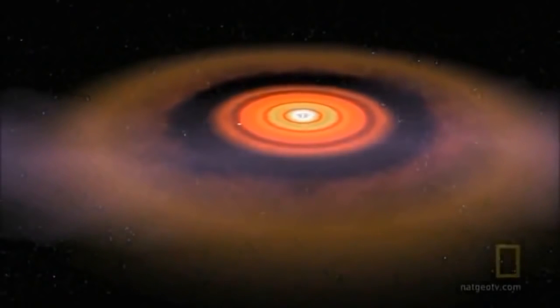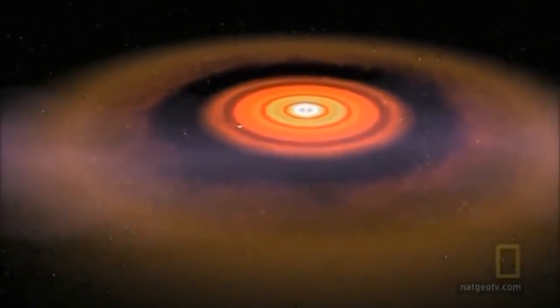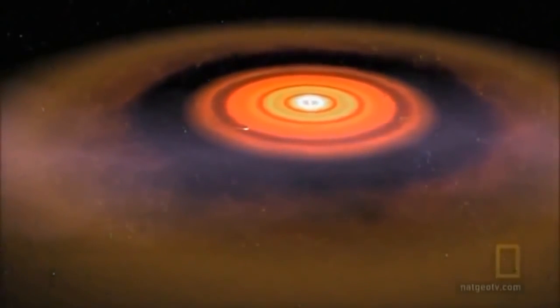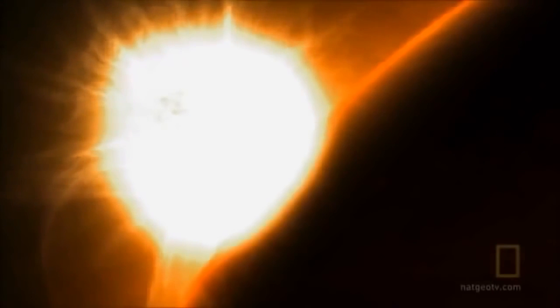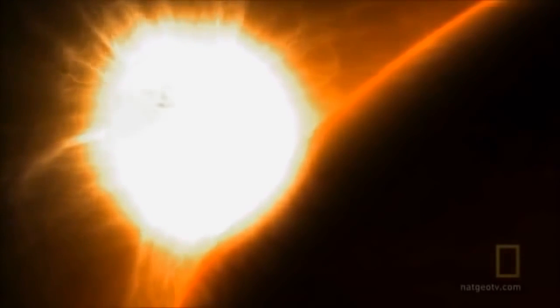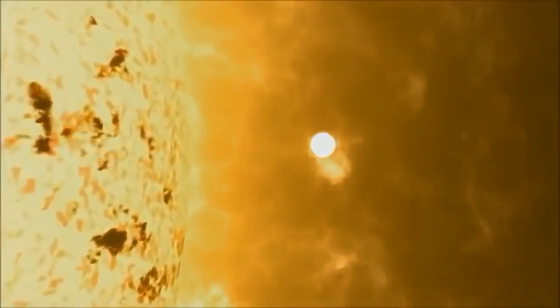These planets migrate through the disk until they find a stable orbit. This is why Bellerophon is so close to its parent star. But one newly discovered world has found its stable orbit in a place no planet should ever go.